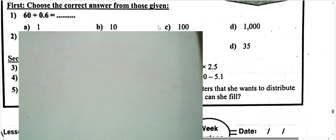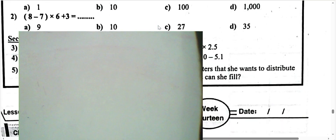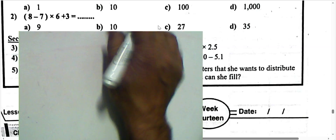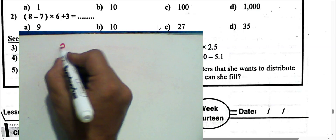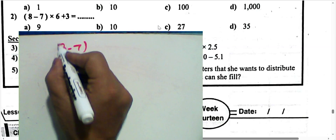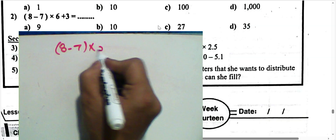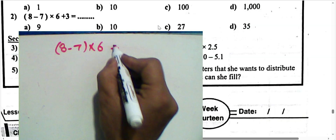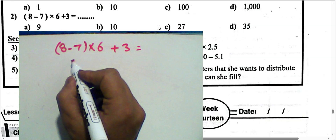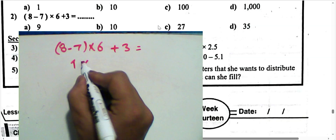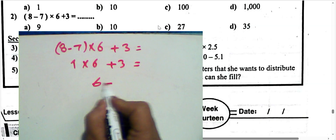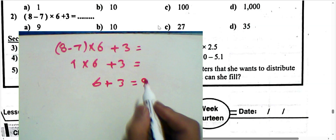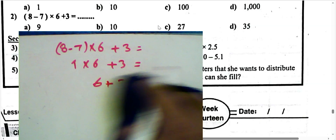Number 2: 8 minus 7 multiplied by 6 plus 3. Following order of operations: 8 minus 7 equals 1; 1 times 6 plus 3; 1 times 6 equals 6; 6 plus 3 equals 9. The result is 9.